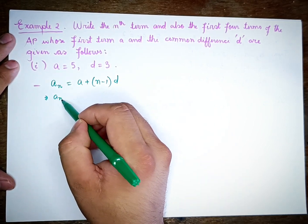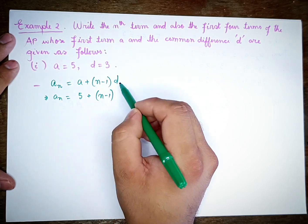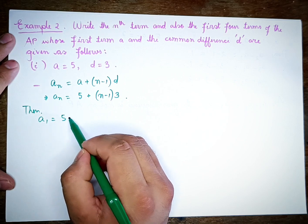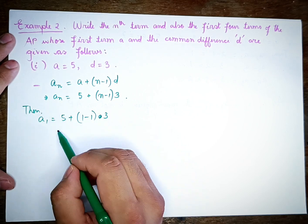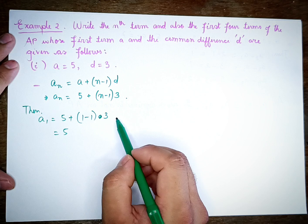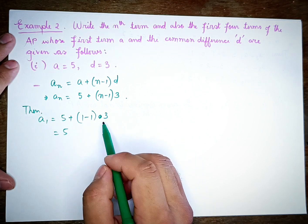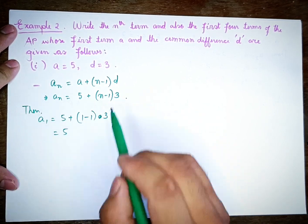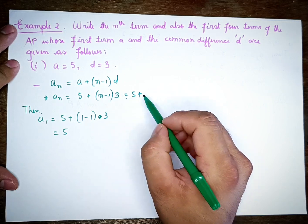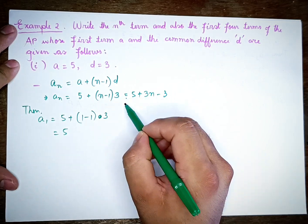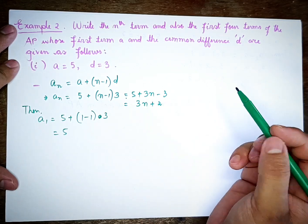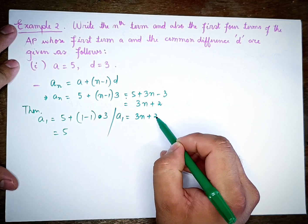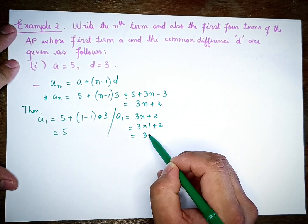Here, A equals 2 and D equals 3, so the Nth term equals 3N plus 2. For A1, substituting N equals 1: 3 into 1 plus 2 equals 5.